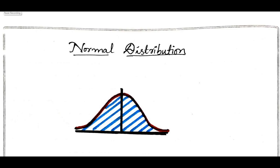Hello everyone, I welcome you all for SVG Tutorials. In this session, I will be discussing the problems on normal distribution and how to find the function of z, that is called phi of z, without a distribution table.